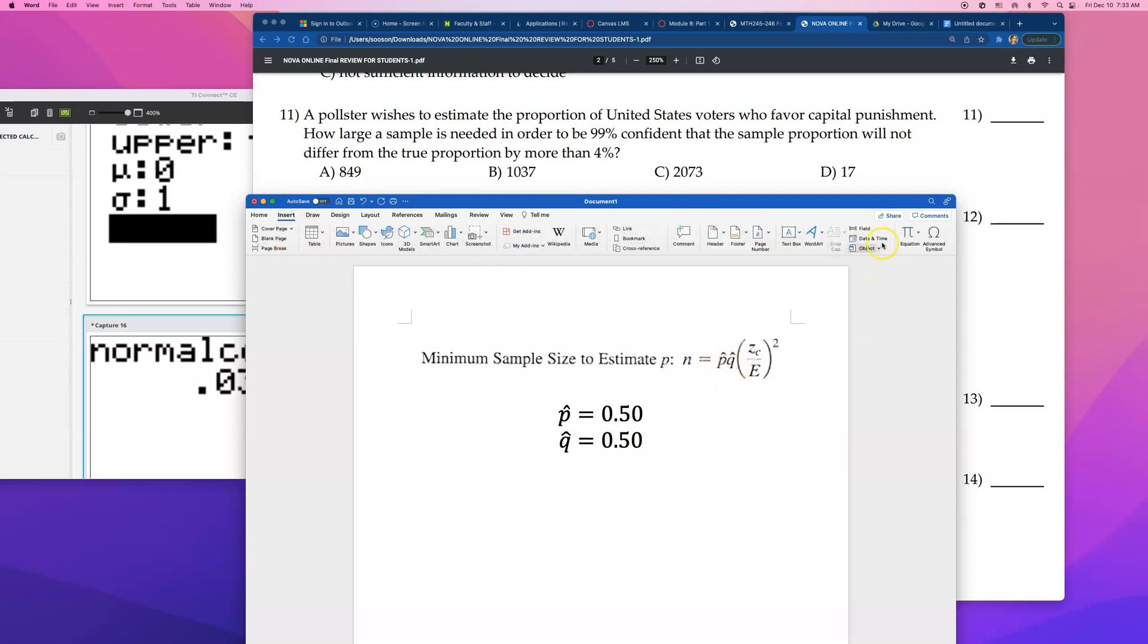Now, the next one they actually gave us is E. They gave us that the desired margin of error, E, is 4%. So type in 0.04. Well, that was 4%. I'll say that this is 4% in decimal.